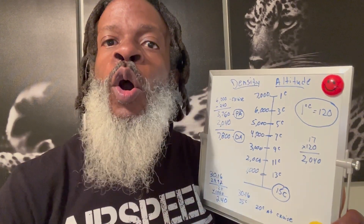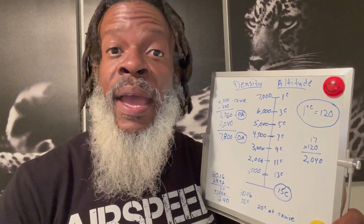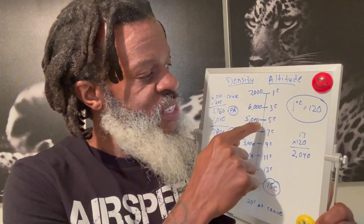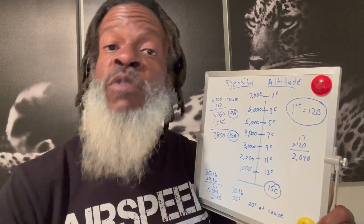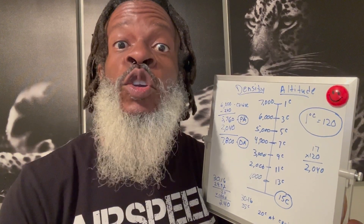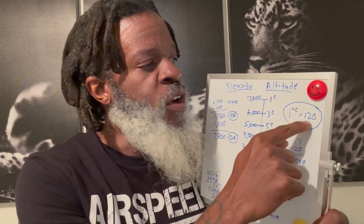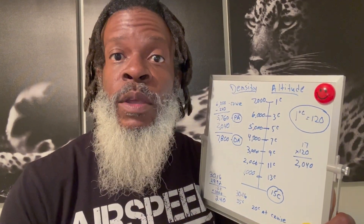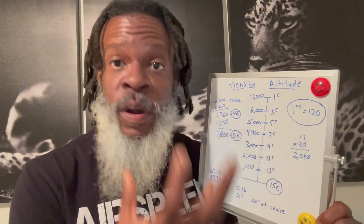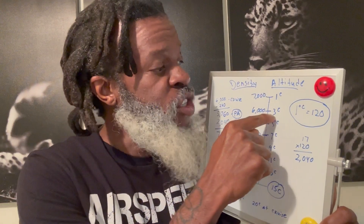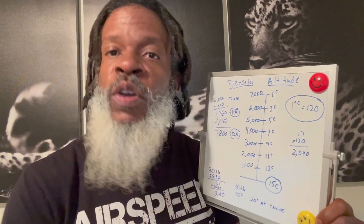Let's look at our scale. What should standard temperature be at 6,000 feet? Going up on our scale, 6,000 feet standard temperature is supposed to be 3 degrees Celsius. But the actual temperature is 20 degrees Celsius. So that's a 17-degree difference.